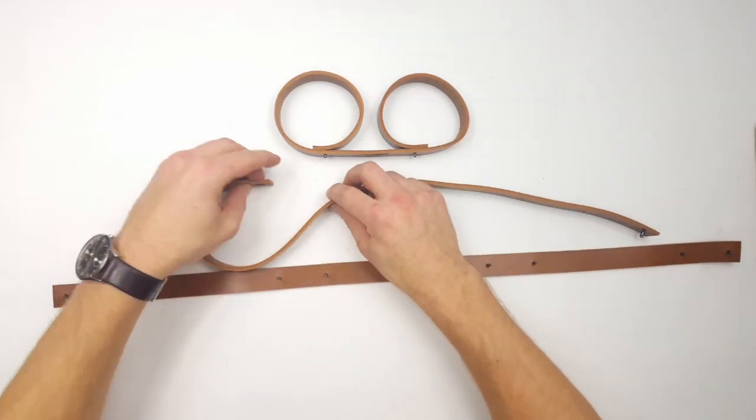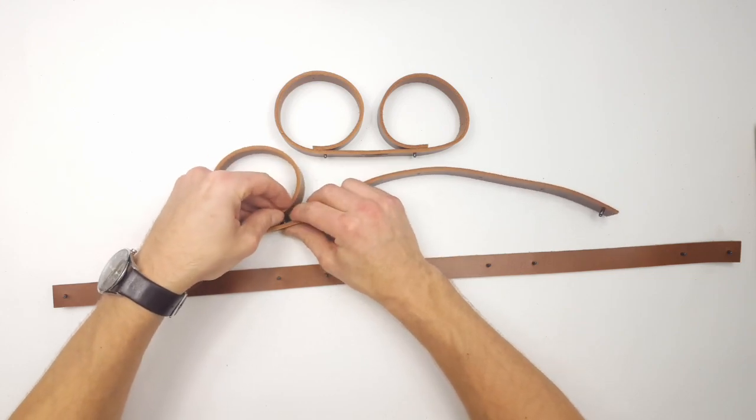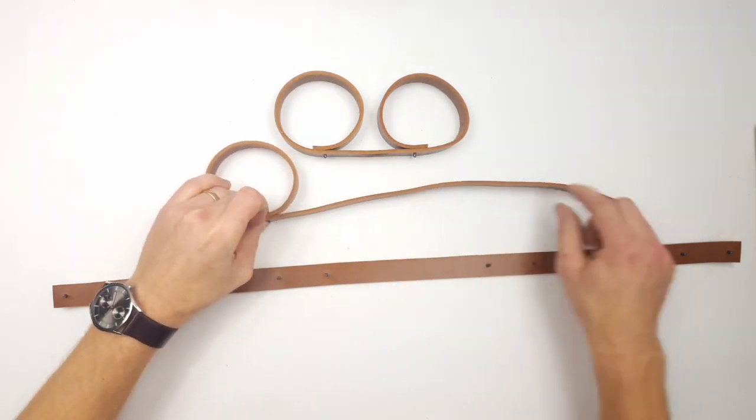First rivet into the fifth hole, so that we have something that looks like a pair of glasses. Do the same for the other strap.